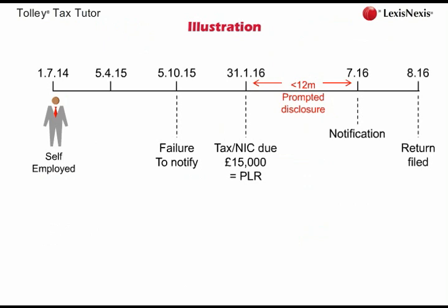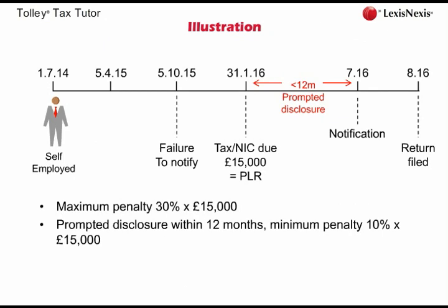The maximum penalty is therefore 30% of the potential lost revenue of £15,000 — the tax return for 2014-15 filed in August 2016 showed tax and Class 4 NIC due of £15,000, which was the liability that should have been paid by the 31st of January 2016. However, Oscar made a prompted disclosure within 12 months of the tax becoming unpaid, so the penalty may be reduced to a minimum of 10% of the potential lost revenue. In addition, Oscar will also be charged an additional penalty for failing to notify his liability for Class 2 NIC — a penalty of between 10% and 30% of the Class 2 NIC due between the 1st of July 2014 and the 31st of January 2016.